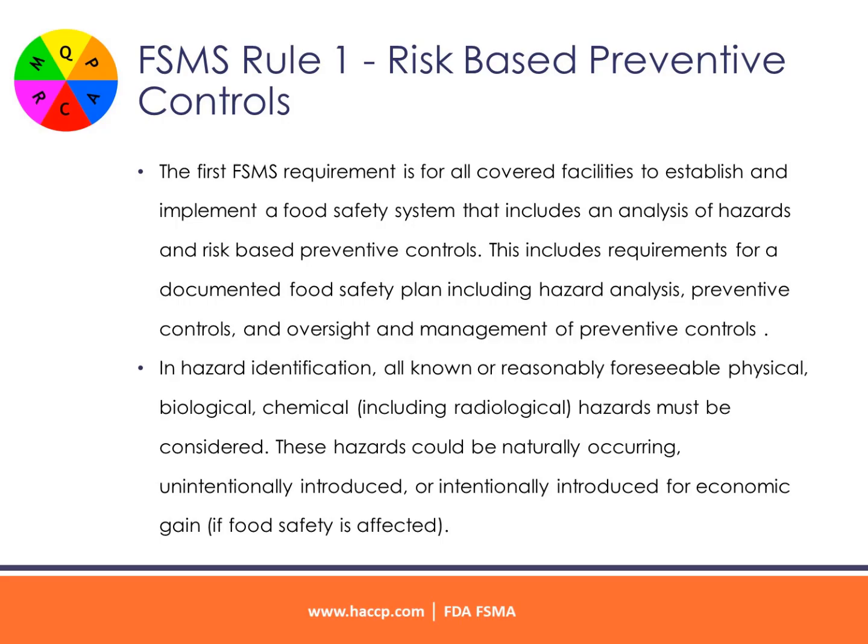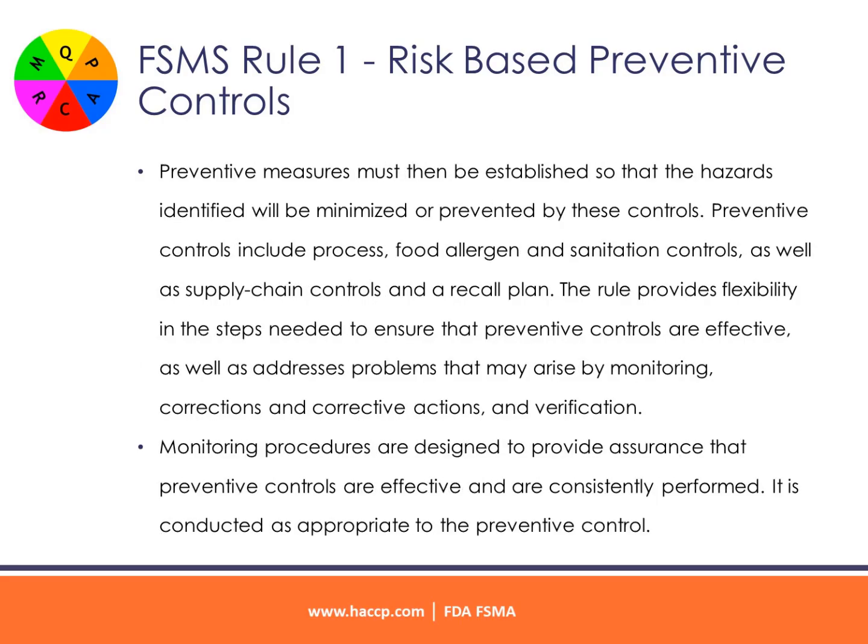These hazards could be naturally occurring, unintentionally introduced, or intentionally introduced for economic gain if food safety is affected. Preventive measures must then be established so that the hazards identified will be minimized or prevented. Preventive controls include process, food allergen, and sanitation controls, as well as supply chain controls and a recall plan. The rule provides flexibility in the steps needed to ensure that preventive controls are effective, as well as addresses problems that may arise through monitoring, corrections and corrective actions, and verification. Monitoring procedures are designed to provide assurance that preventive controls are effective and consistently performed, conducted as appropriate to the preventive control.